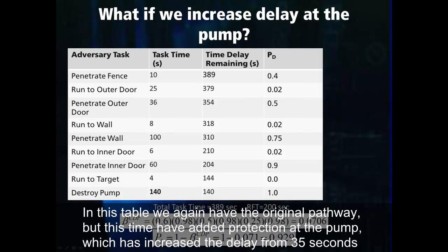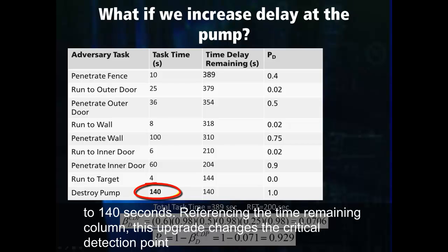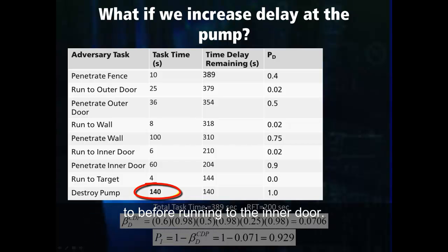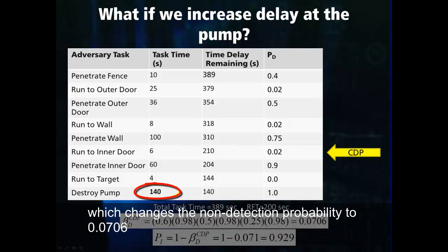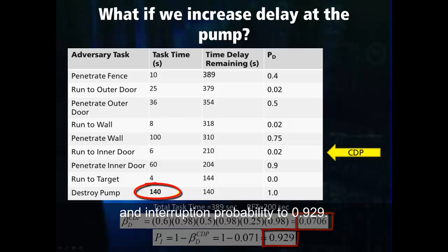In this table, we again have the original pathway, but this time have added protection at the pump, which has increased the delay from 35 seconds to 140 seconds. Referencing the time remaining column, this upgrade changes the critical detection point to before running to the inner door. As a result, the detection elements up to this task are included in the interruption probability, which changes the non-detection probability to 0.0706 and the interruption probability to 0.929.